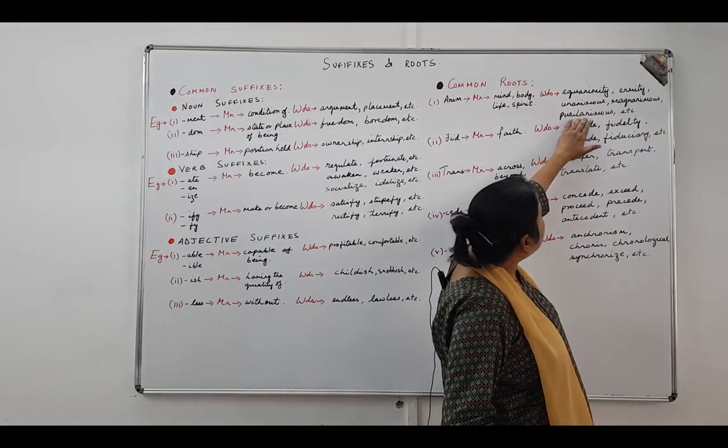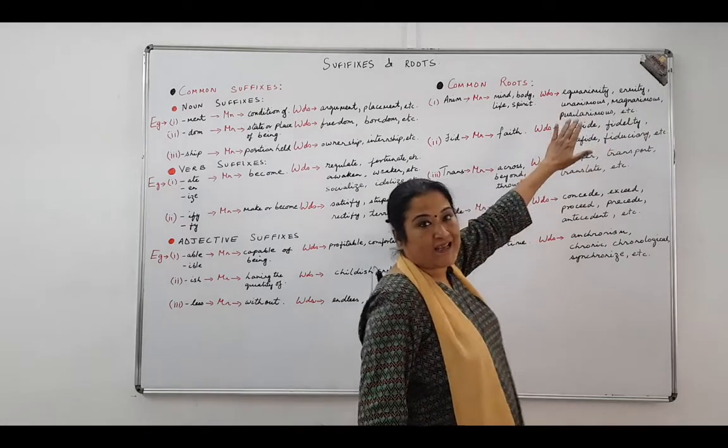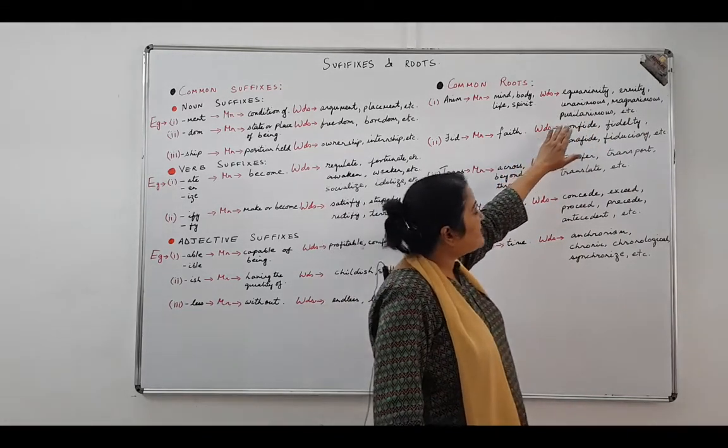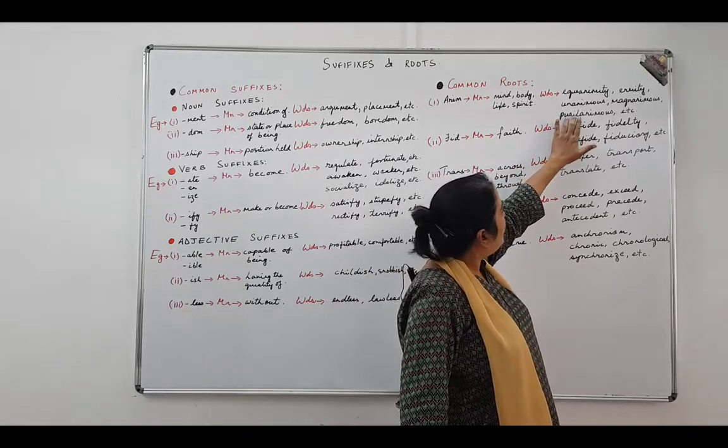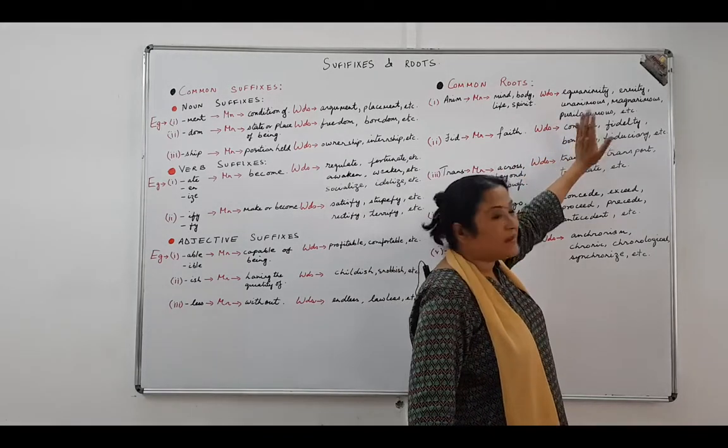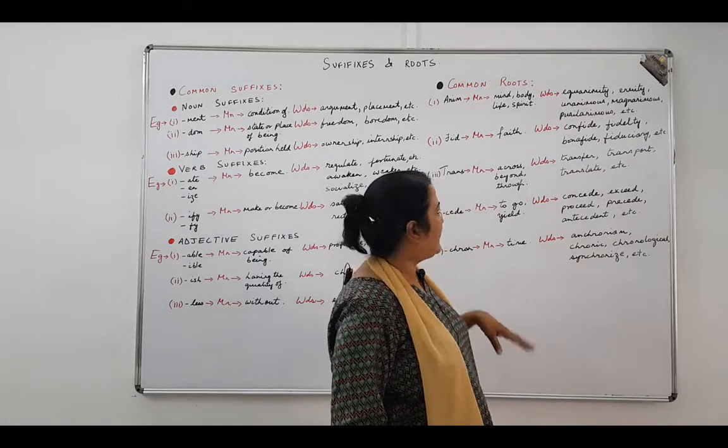Similarly, pusillanimous. Now pusillus is another root word which means very small. So when it combines with ani, it becomes people with very small minds.